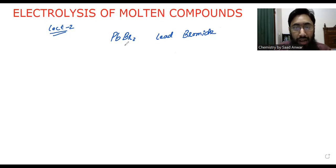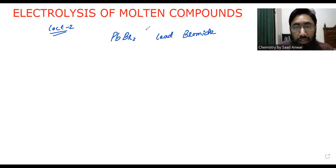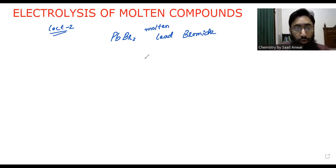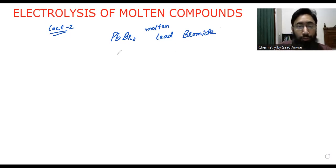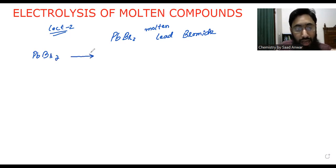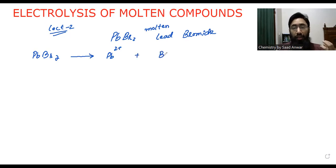For example, in case of lead bromide — if this is molten lead bromide, and what does molten mean? Molten means melted. So molten lead bromide gives two ions: one is the lead ion and the other is the bromide ion. When we do electrolysis of lead bromide, we will get lead ions Pb²⁺ and we will get bromide ions.